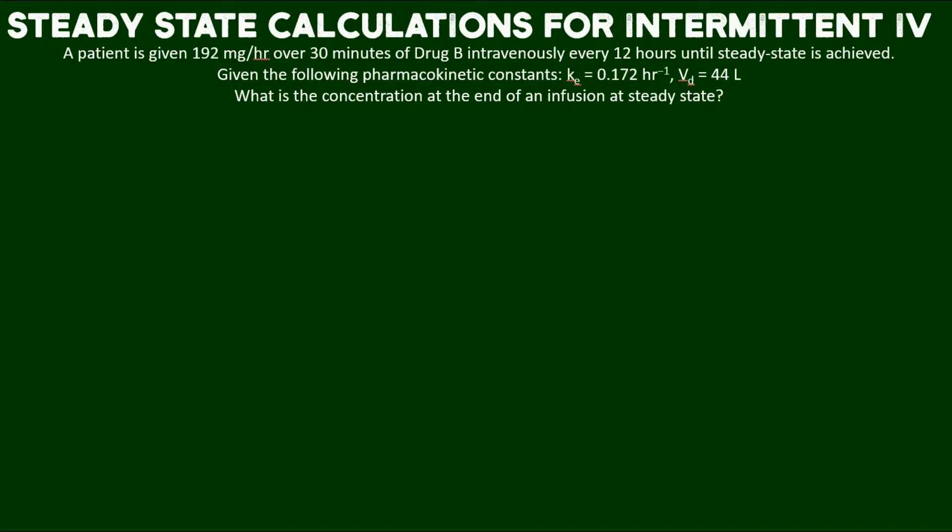Given the following pharmacokinetic constants, including an elimination rate of 0.172 hours to the negative one and a volume of distribution equal to 44 liters, what is the concentration at the end of an infusion at steady state?